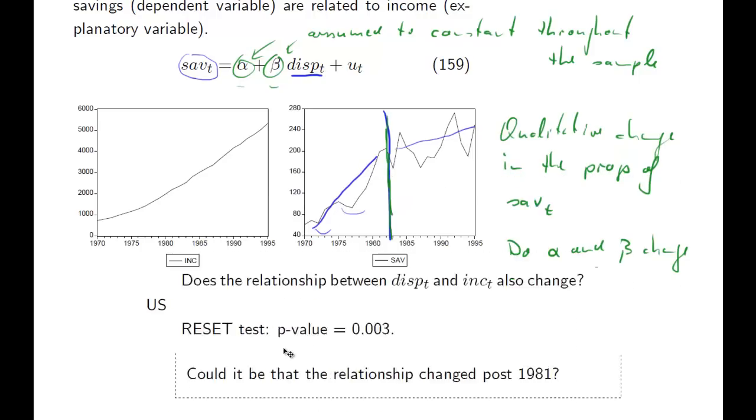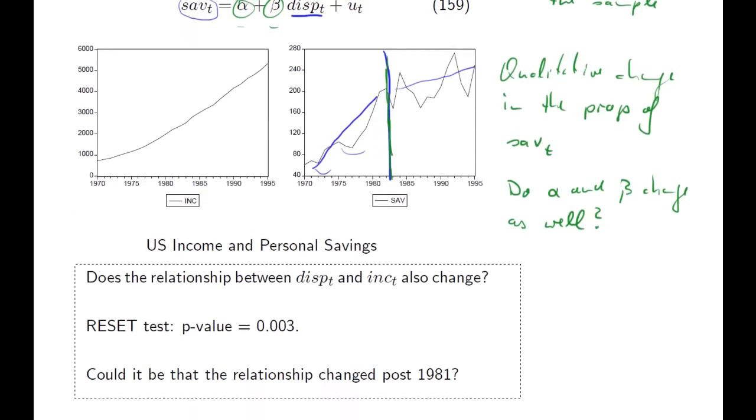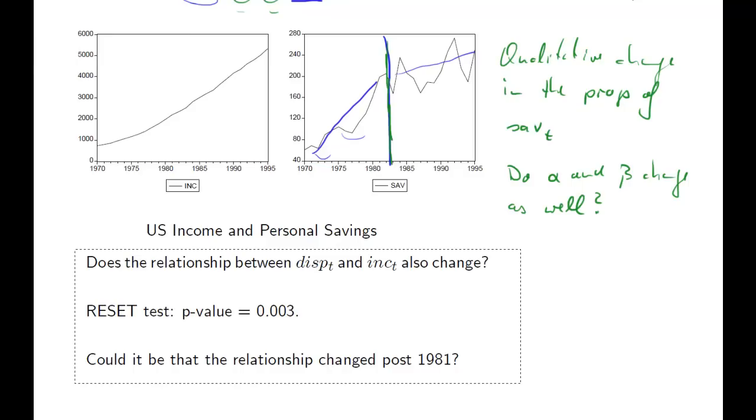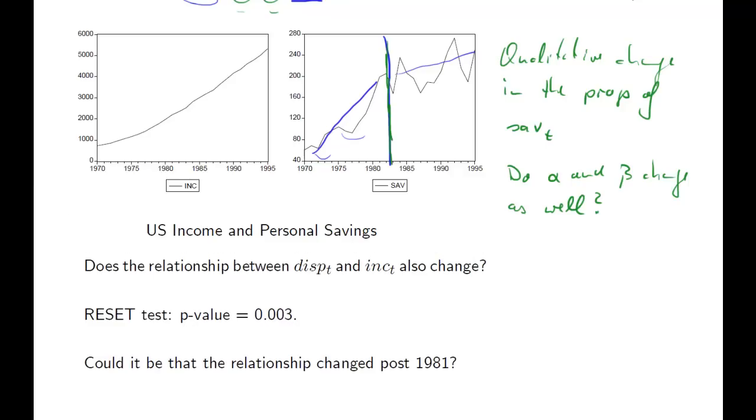So it turns out that if you perform a RESET test, what we talked about in the previous section, on this relationship, on this data, you find a p-value of 0.003. That clearly indicates that there is a problem. Now that could be some omitted variable. It turns out it is an omitted variable, but it is because of this structural change. So could it be that the relationship changed after 81? This is where we have potentially the change. This is the question we're going to tackle now.